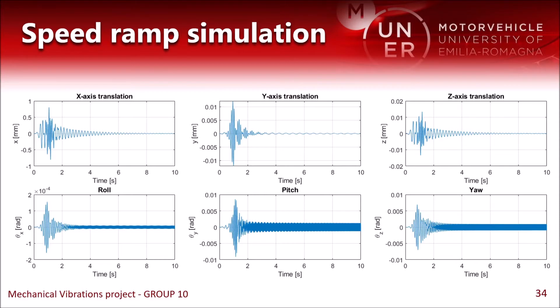And this is the system response during the speed ramp. We can see that we have very little displacements for all the degrees of freedom. We have peak motion that is reached at about one second into the simulation, and that is because all of our natural frequencies are below 1000 RPM, so we meet them quite early in the speed ramp. Then as we move further away from the resonance condition, we have that the system response becomes more stable.